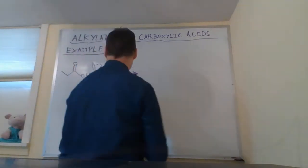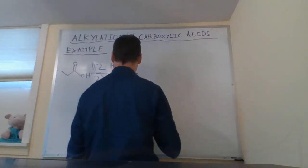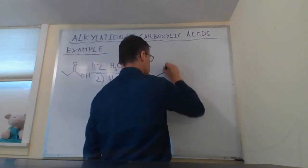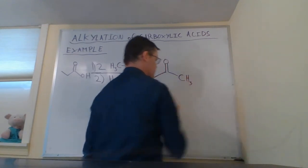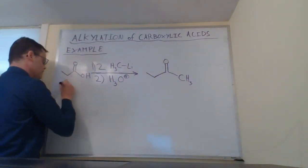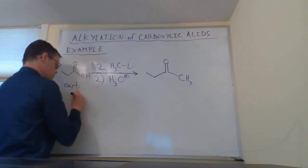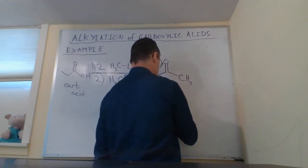What we end up getting from this is we're going to replace the OH in the carboxylic acid with a methyl group, CH3. So our net result here is we take a carboxylic acid and we turn it into a ketone.